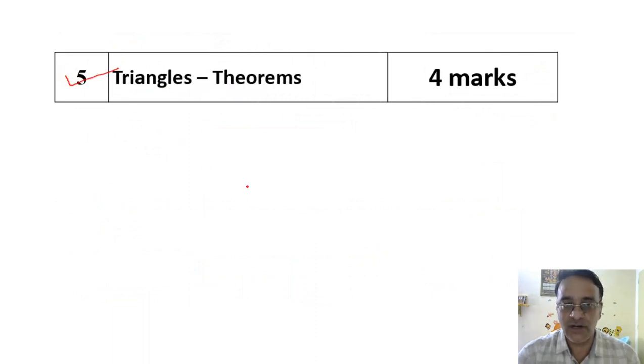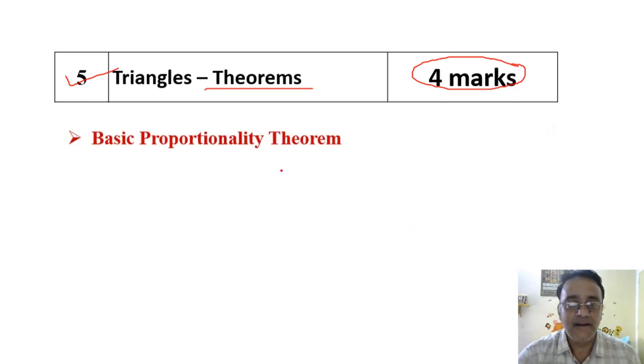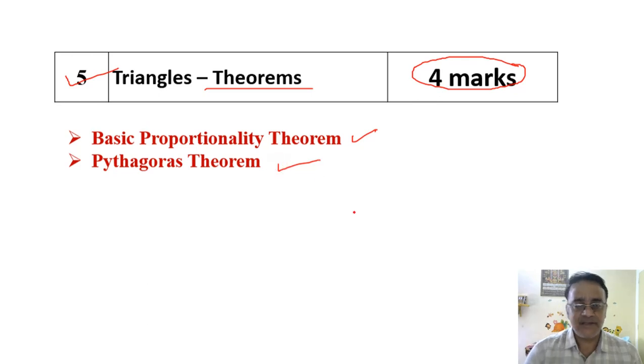Now let us move toward the next chapter, Triangles - Theorems only, in which you can easily score 4 out of 4 marks. In this, only two theorems are there this year - Basic Proportionality Theorem and Pythagoras Theorem. If you practice very well you can easily score 4 marks, 4 out of 4 marks. So total marks is 25.